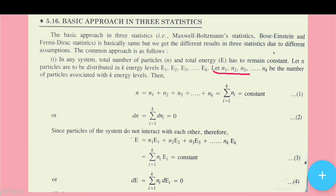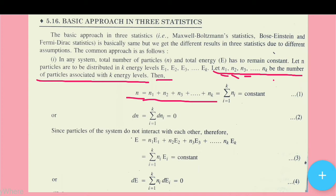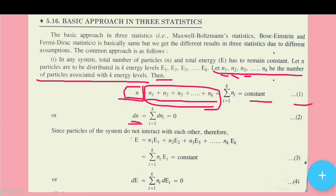Let N1, N2, N3, and so on up to Nk be the number of particles associated with the K energy levels. The sum N1 + N2 + ... + Nk equals the total number of particles N, which is constant. Differentiating this constant, summation from i=1 to k of dni equals zero.